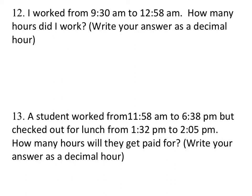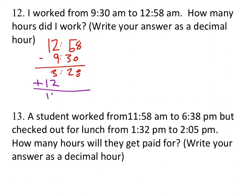If you worked from 9:30 AM to 12:58 AM, how many hours did you work? We add the 12 hours for the AM-to-PM crossing, so it's like going from 9:30 to 12:58. Subtracting: 12 hours 58 minutes minus 9 hours 30 minutes gives 3 hours 28 minutes, then adding 12 hours for crossing noon gives 15 hours and 28 minutes — a long work day.